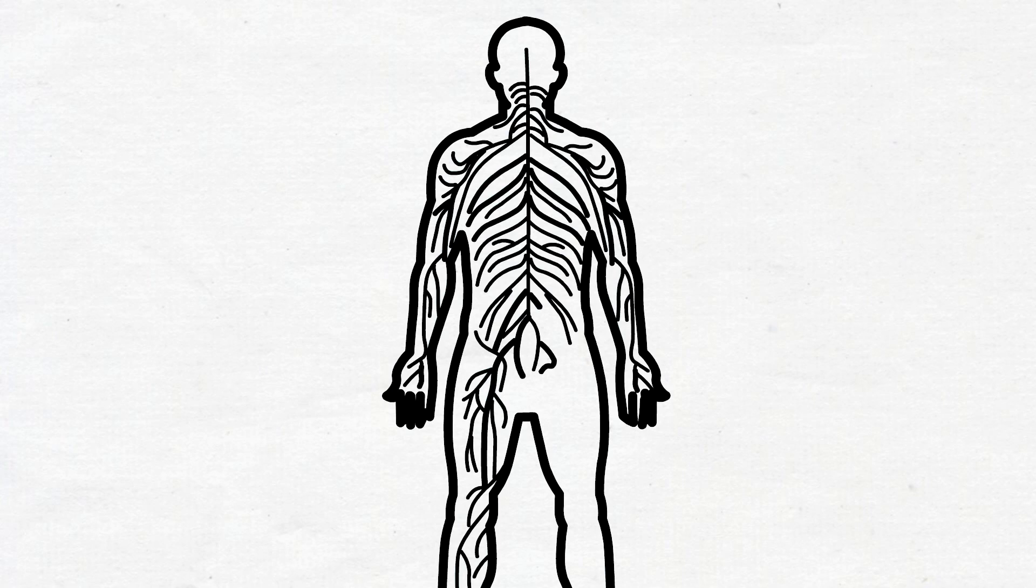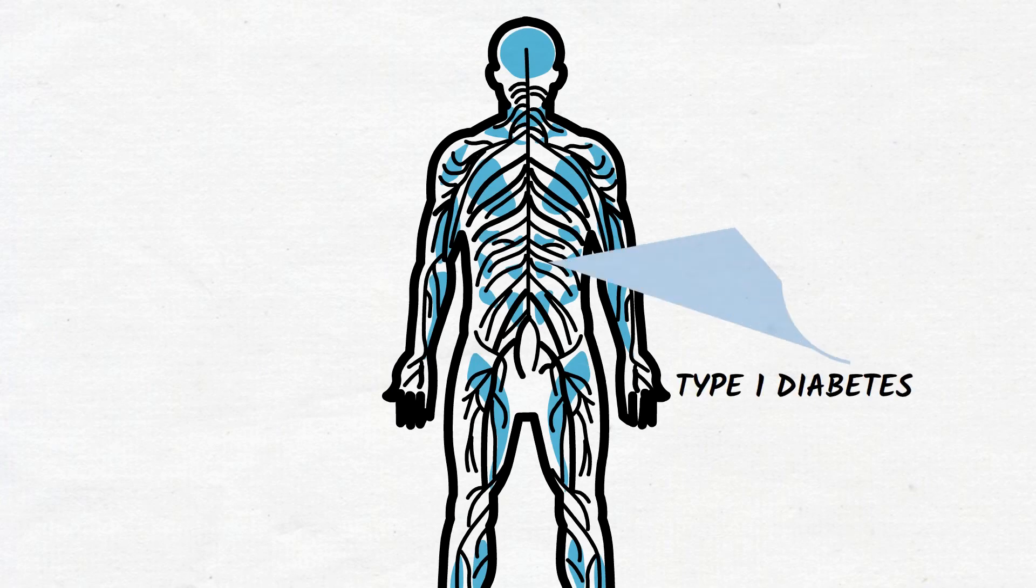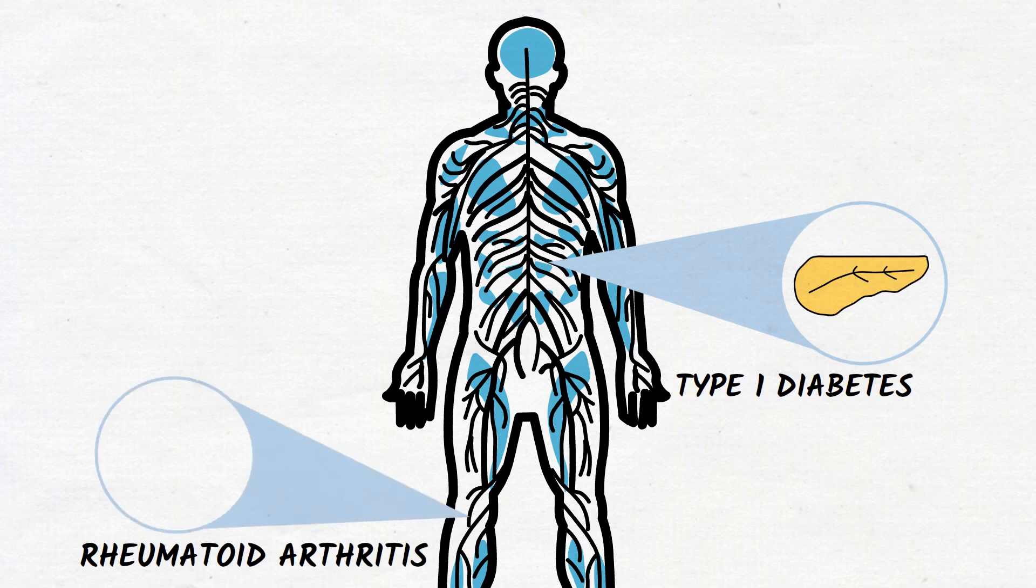Some of the most common autoimmune diseases are type 1 diabetes, when autoantibodies attack and destroy insulin-producing cells in the pancreas; rheumatoid arthritis, meaning that the immune system attacks joints, causing inflammation, swelling, and pain, which causes permanent joint damage if left untreated.